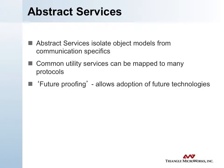These abstract service definitions are intended to isolate the object models and the applications from the communication specifics. Common utility services like get value, set value, and select before operate are common across a broad range of utility applications and can be mapped to almost any kind of protocol. This future-proofing allows us to adopt new technologies without disturbing the whole system, and it builds in a migration strategy directly into the way that 61850 has been defined.